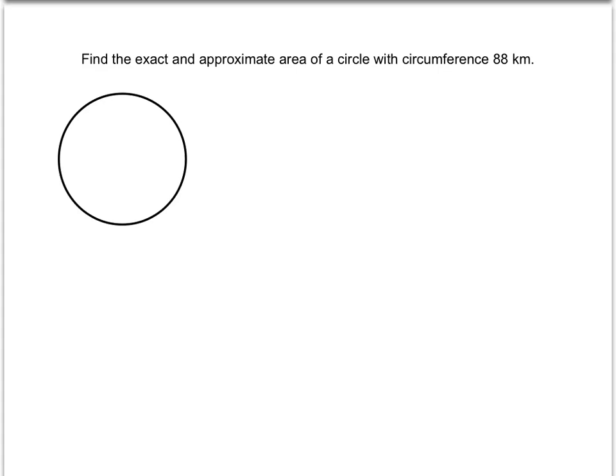In this next problem, we need to find both the exact and approximate area of the circle, given that the circumference is 88 kilometers. In other words, the distance around the circle is 88 kilometers.